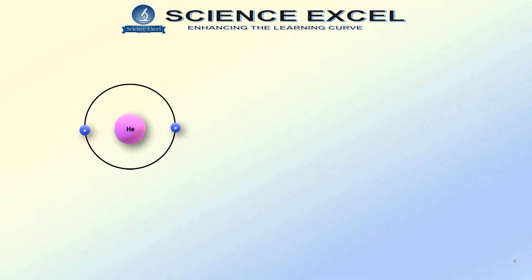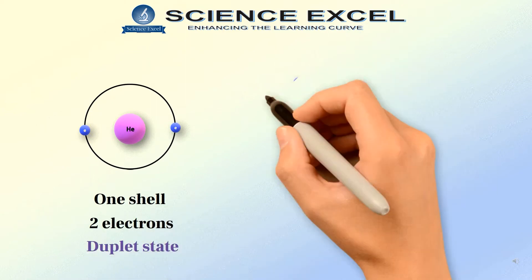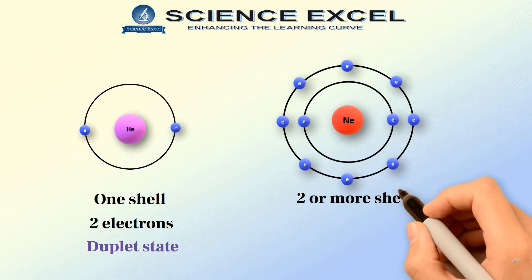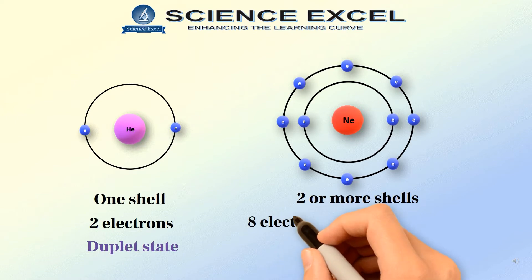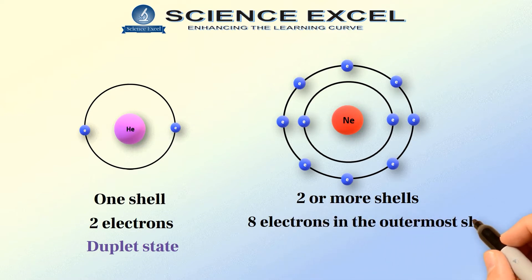If the atoms have only one shell, then a stable state is achieved when two electrons are present in it. This is called a duplet. But if the atoms have two or more than two shells, then the stable state is achieved when the outermost shell contains eight electrons. This is called an octet.